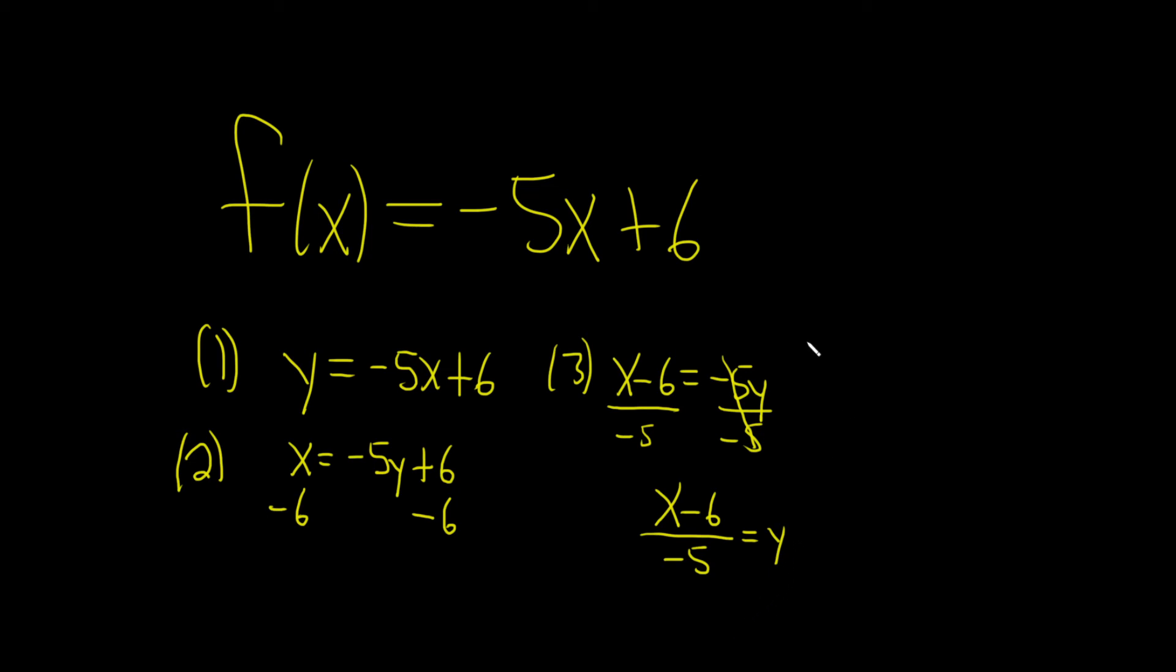I guess we can rewrite this as y equals, let's see, x over negative 5 is really negative 1/5 x. Right? It's x over 5, but you can write it that way. And then this one over this one will be a plus 6/5.